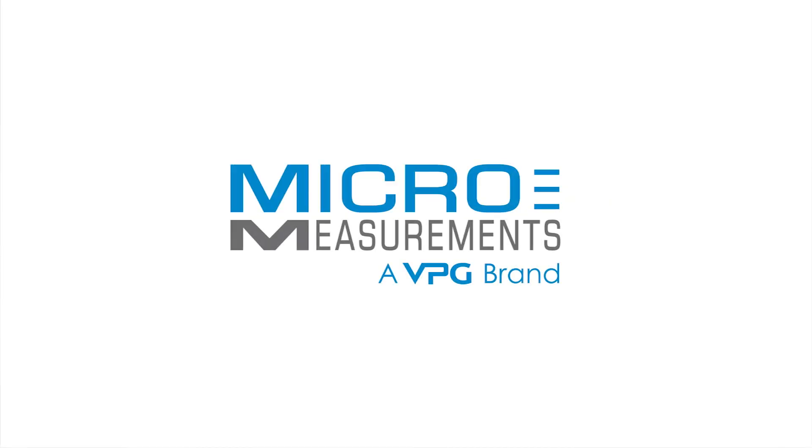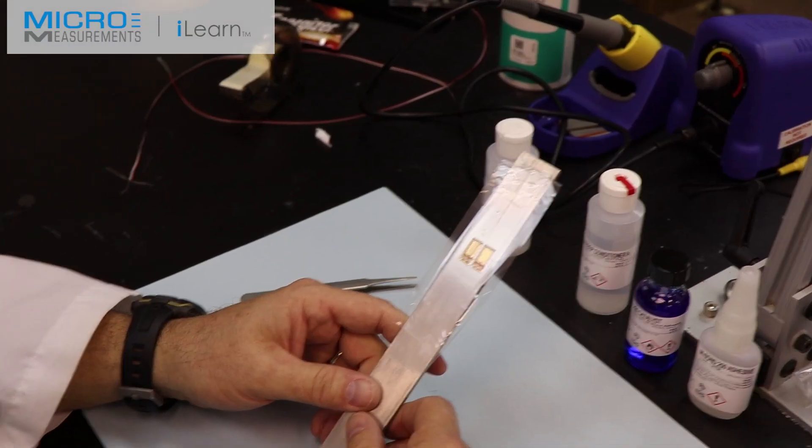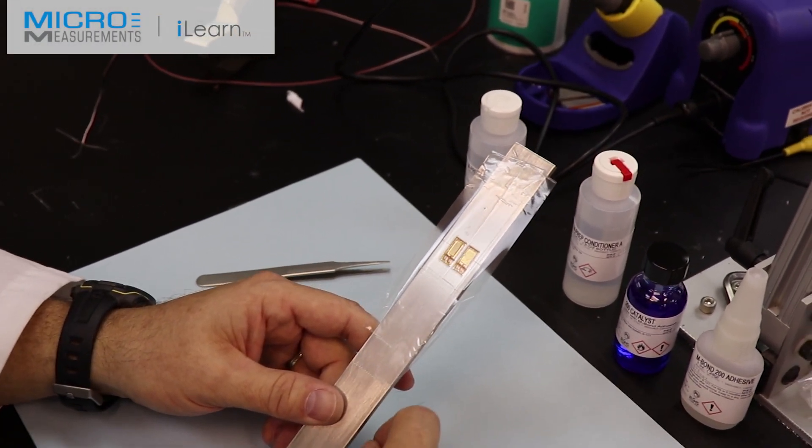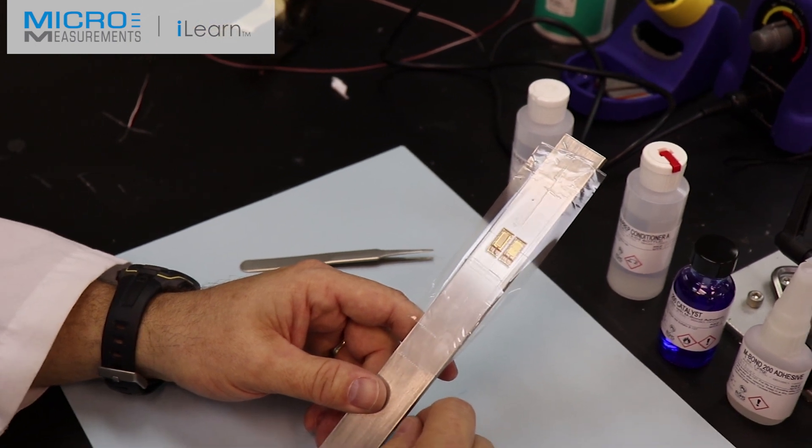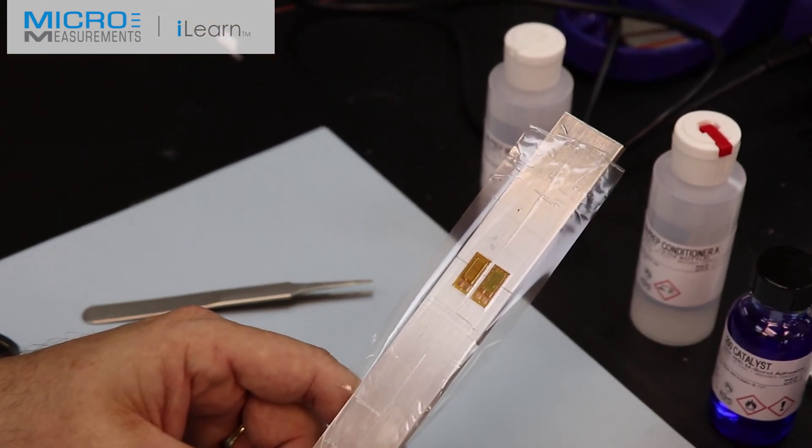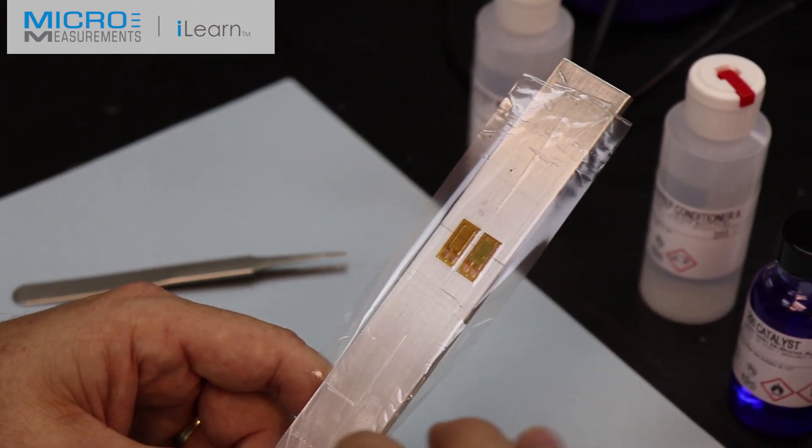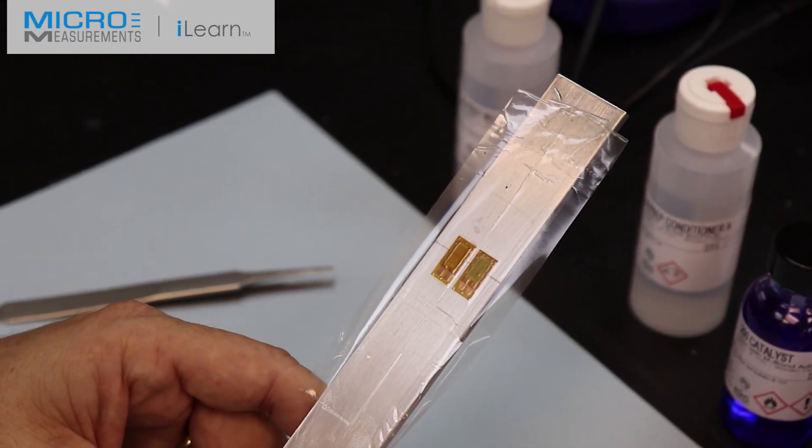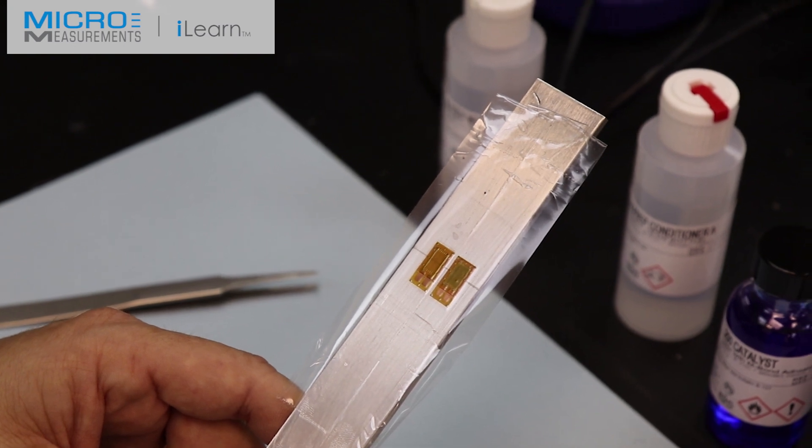Okay, so we've waited our one minute of thumb pressure. Typically afterwards, we wait one minute of thumb pressure and then we let it sit for two minutes. And after that, the strain gauges should be installed.